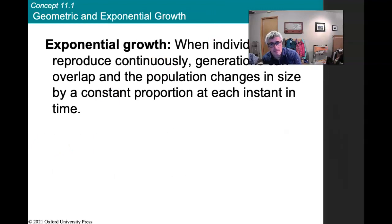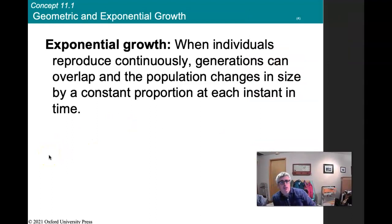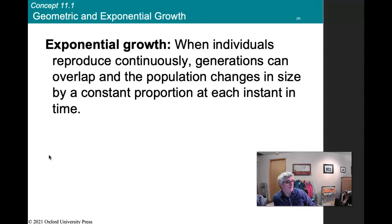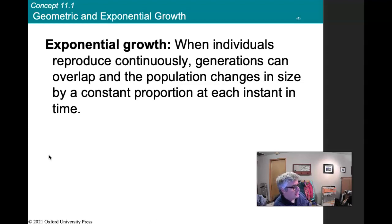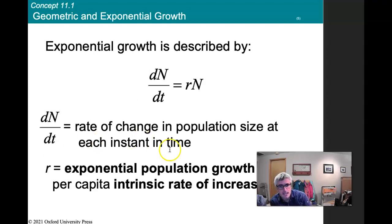Exponential growth is when individuals reproduce continuously, generations can overlap, and the population changes in size by a constant proportion at each instant in time. We could calculate a daily exponential growth rate for bacteria, a monthly rate for phytoplankton or zooplankton, or an annual growth rate for other organisms. Squirrels, for example, can have multiple breeding seasons a year — usually around January and again in summer.